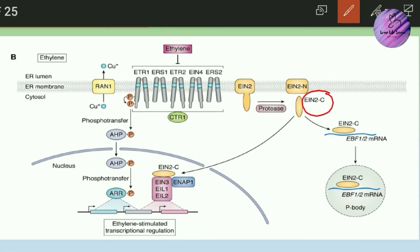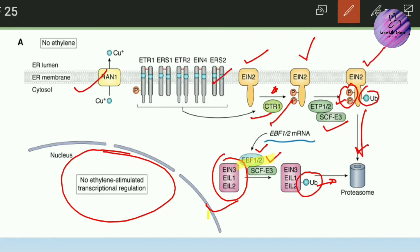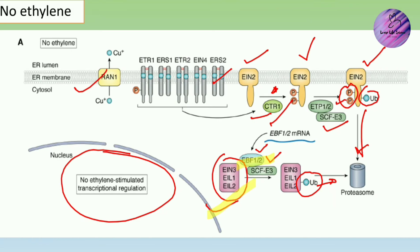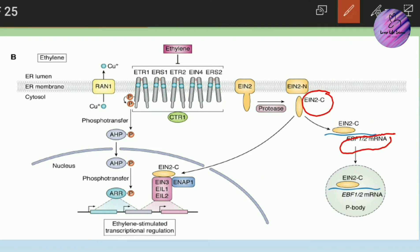The EIN2 C-terminal has two important roles. The first role is that it binds to the mRNA involved in the expression of EBF1 and EBF2. Since EBF1 and EBF2 are involved in degradation of transcription factors, it is important to degrade their mRNA. EIN2-C tags the EBF1/2 mRNA and directs it to processing bodies, where it is degraded by exoribonuclease. Remember, it is the EBF1/2 mRNA being degraded, not the EIN2-C portion itself.